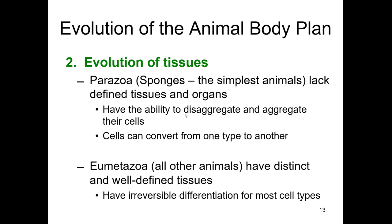We say that sponges have the ability to disaggregate and aggregate their cells. Even more interesting, the cells are not terminally differentiated in a sponge — the amoebocytes and choanocytes can convert from one type to another, which is really unusual. These strange characteristics are why the Parazoa are a branch that splits off from the rest of the animal kingdom very early in evolution.